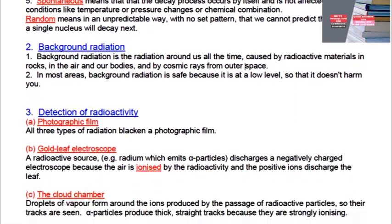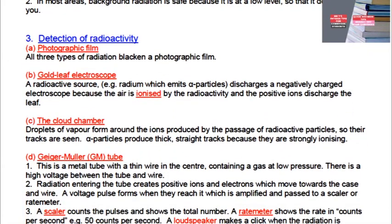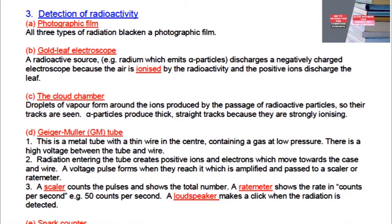Now we're going to move into detection of radioactivity. There must be a way of detecting radiation, and detection is done using detectors. All detectors of radioactivity use the ionizing ability of radiation. Ionization is the knocking out of electrons resulting in a positively charged ion. This radiation tends to knock out some electrons, and that results in the ability to be detected using photographic films, gold leaf electroscope, the cloud chamber, the Geiger-Muller tube, and the spark counter.